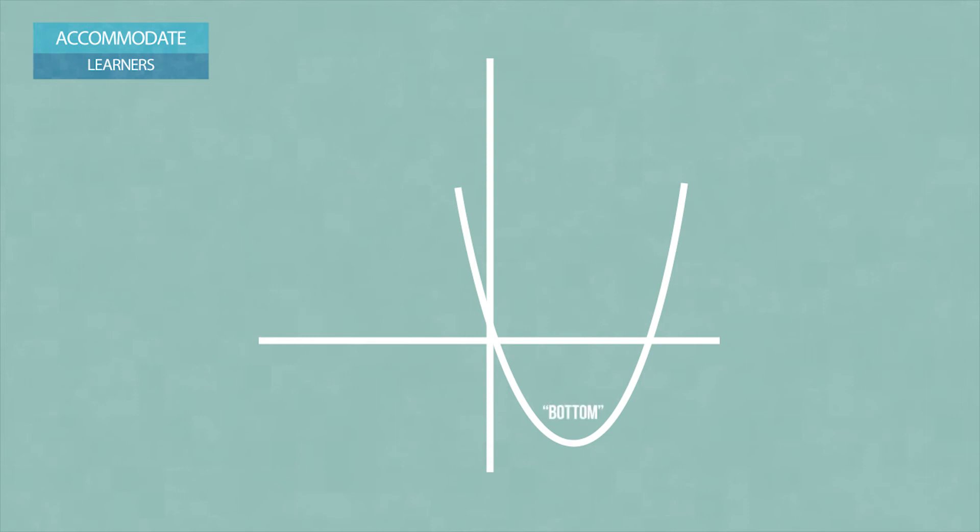They will need a way to refer to that turning point in the curve that keeps moving around, and they will have to talk about how y equals x squared is different than y equals negative x squared. This is a great opportunity for you to connect their vocabulary with more formal vocabulary.